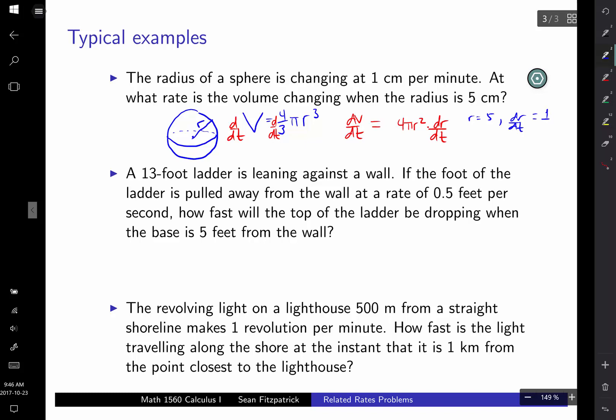And I plug those numbers in, and then I get that my dV/dt is going to be 100π cubic centimeters per minute. So that's a pretty simple problem. I'm not going to actually solve all of these, but that's a basic setup.